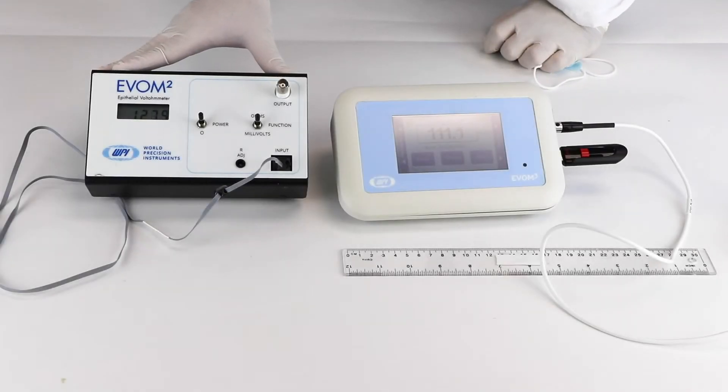On this side we have our older model EVOM 2, which is a simple equipment that you can run either in ohms mode or in millivolts mode. If you switch the button it goes to millivolts, this one goes in ohms mode.